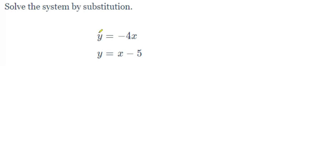In this problem I have y isolated in both equations. So now we have a couple options. I can either take this x minus 5 from the bottom and put it for y in the top because y's are the same, or I can take this negative 4x from the top and put it in for y in the bottom.